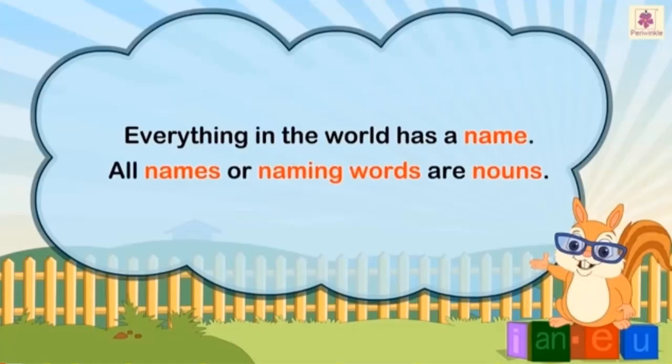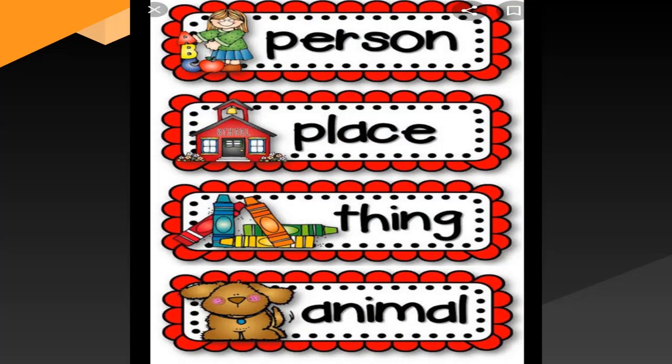Everything in the world has a name. All names, all naming words are nouns. Naming words are the names of a person, place, thing or an animal.